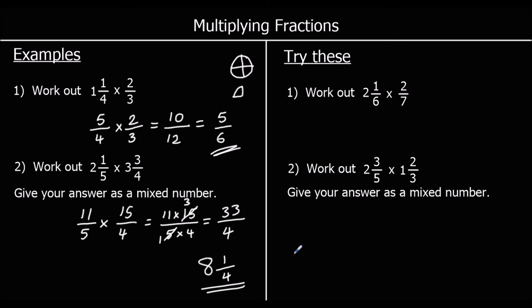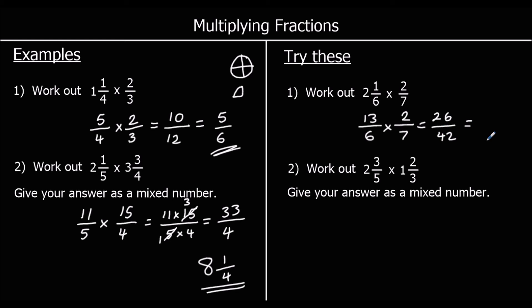We've got two and one-sixth times two-sevenths. Let's change this into a top-heavy first — two sixes are twelve, plus one is thirteen, so we've got thirteen-sixths times two-sevenths. Times the top: thirteen times two is twenty-six. Times the bottom: six sevens are forty-two. These are both even, so we can half the top and the bottom, which gives us thirteen over twenty-one.